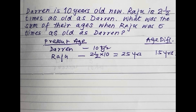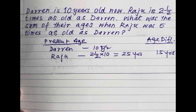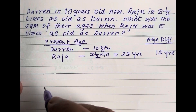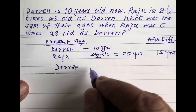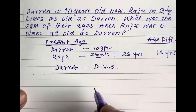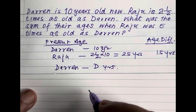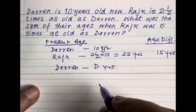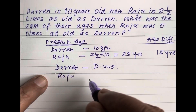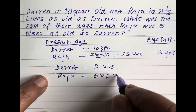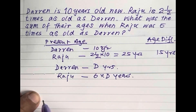Please remember that this age difference of 15 years between the two is a constant — it will remain the same always, in the past as well as in the future. So let Darren be D years old when Raju was six times as old as Darren. So Raju's age was six times D years, and hence the age difference is six D minus D.